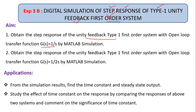G(s) = 1/s has the highest power of the denominator equal to 1, so it is a first order system with one pole at origin, making it a type 1 system. We also consider a second case with G(s) = 1/2s, again with unity feedback, and we find the closed loop transfer function and apply a step input to identify the output response.